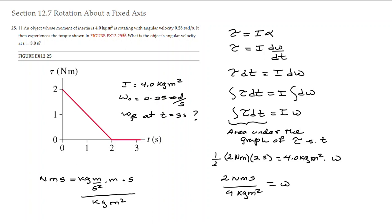Let me explain what happens with the units. We have newton-meters times seconds: newtons is kilograms times meters over seconds squared, so times meters, times seconds, divided by kilograms times meters squared. The kilograms cancel, meters times meters gives meters squared which cancels with the meters squared below, and one of the seconds cancels, leaving one over seconds — which is just radians per second.